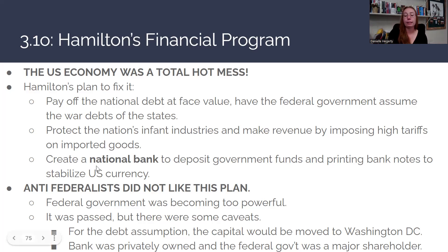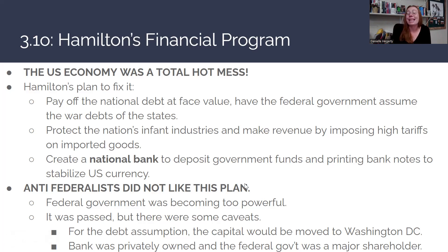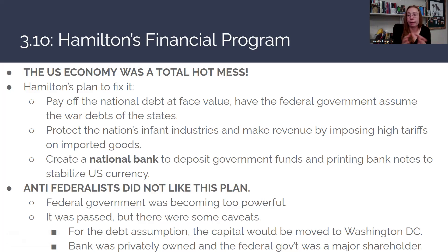The third part of the plan was to create a national bank to deposit government funds and print bank notes to stabilize U.S. currency. Previously, states were printing their own money, causing inflation. Anti-Federalists, many from the South, strongly opposed this plan — they felt it gave the government too much power, favored wealthy investors, and would create an unhealthy alliance between the wealthy and the federal government.